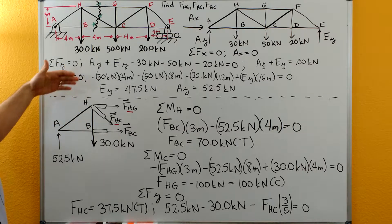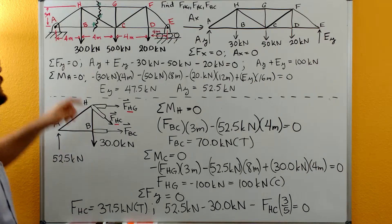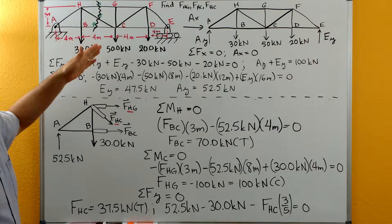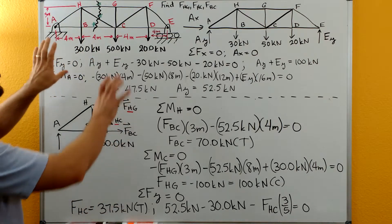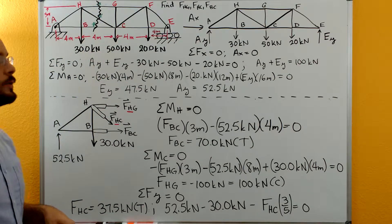In this video, we're going to solve for those three unknowns with method of sections. To create our section, we want to cut completely through the truss so we have two completely separate sides.